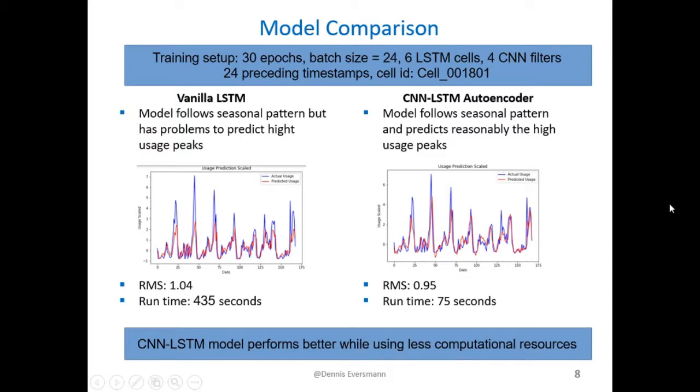On the left hand side the results of the vanilla model are shown. In blue you can see the true data where in red the predicted data is shown. It turns out that the RMS is given by 1.04, whereas the runtime of the model is given by 435 seconds. One can see that the daily pattern is very well predicted by the model. However, the high peak usages during the afternoons and evenings are badly predicted in this model.